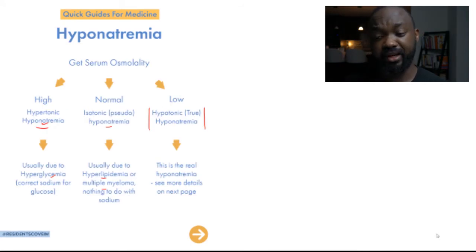Next thing would be to get your serum osmolality. Serum osmolality basically helps you differentiate what type of hyponatremia it is. In fact, the one that we're trying to focus mostly on is true hyponatremia. So when you have your serum osmolality high, because sodium contributes to the majority of the osmolality in the blood.